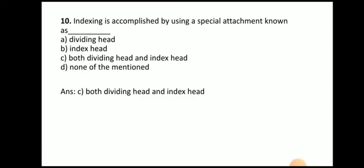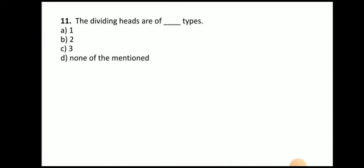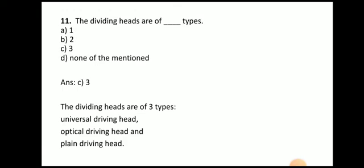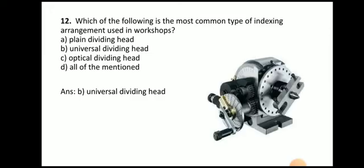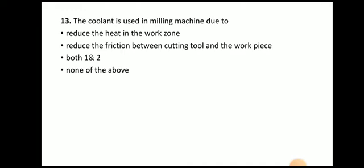Next question: indexing is accomplished by using a special attachment known as — the answer is both dividing head and index head. Next: the dividing heads are of how many types — one, two, three, or none of the mention. The answer is three: universal dividing head, optical dividing head, and plain dividing head. The most common type of indexing arrangement used in the workshop is the universal dividing head.